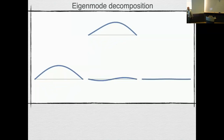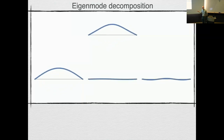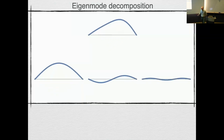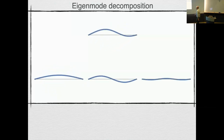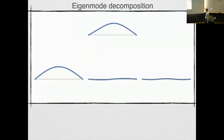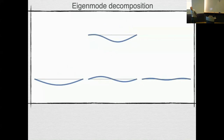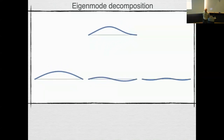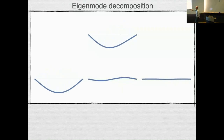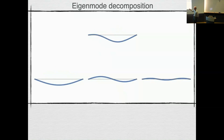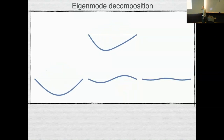Any musician in the audience will recognize these vibrations. This one corresponds to the fundamental mode of vibration, this one to the first harmonic, and this to the second harmonic. In general there'd be an infinite series of higher harmonics, but the energy decays — most energy is in the fundamental, a bit in the first harmonic, and a bit less in the second.